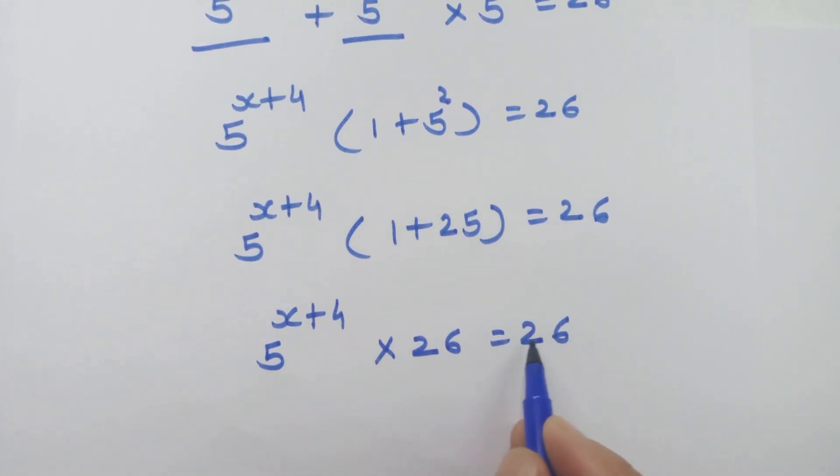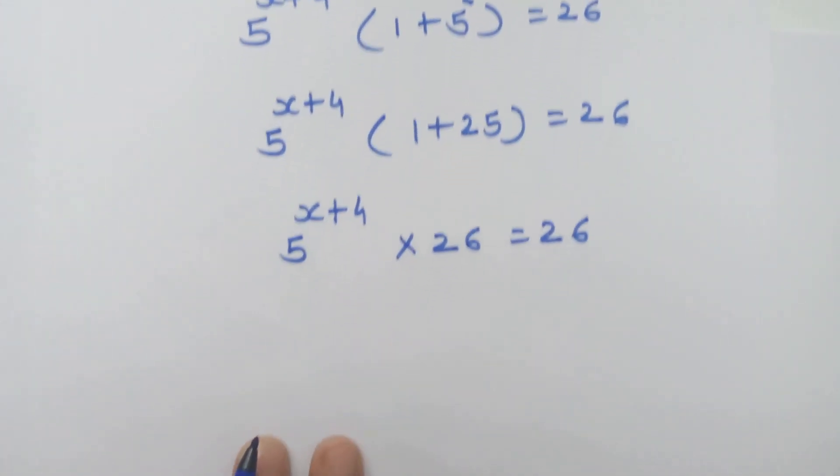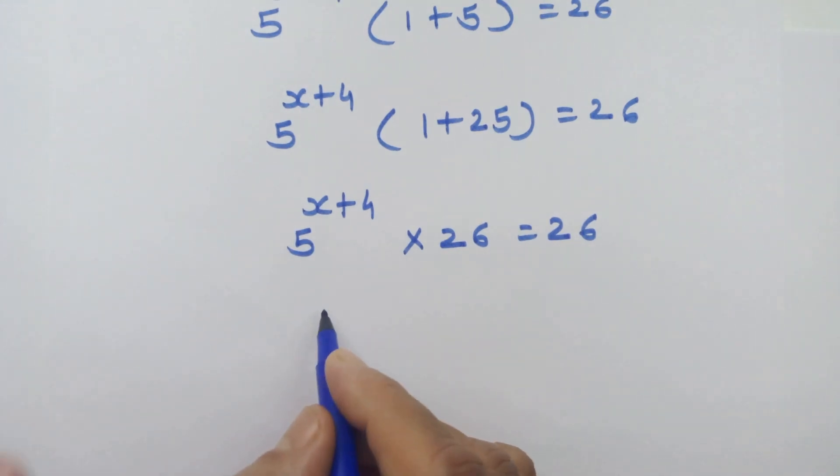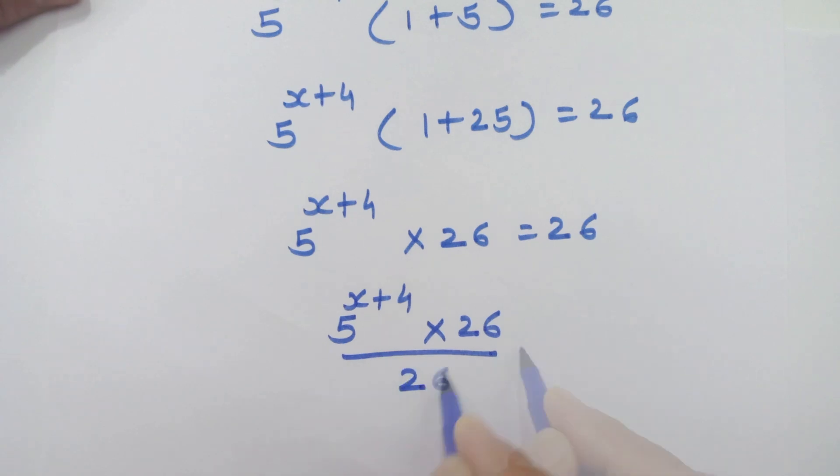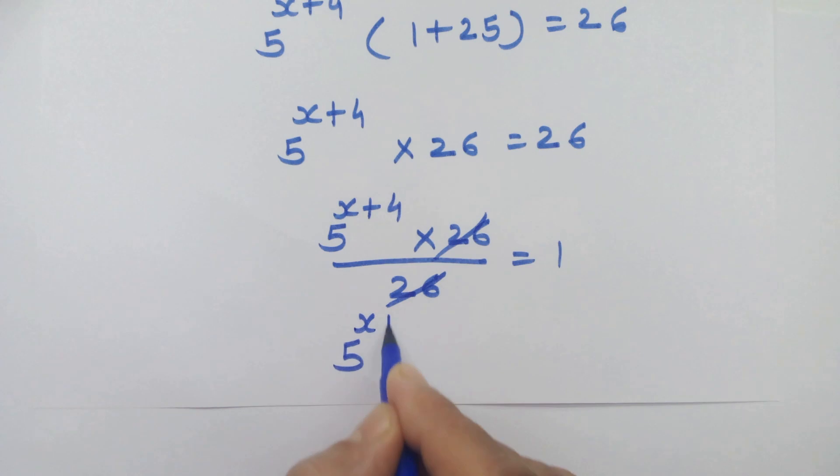Now let's move this 26 on left hand side as denominator. This 26 will be cancelled. So our next step is 5 raise to x plus 4 is equal to 1.